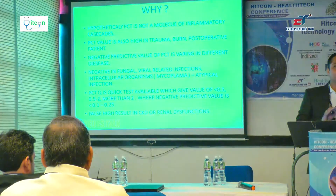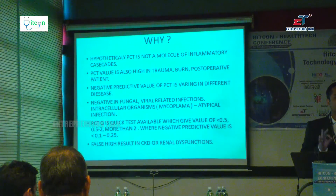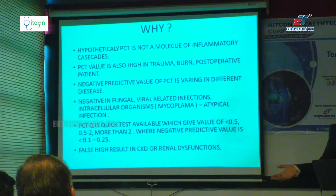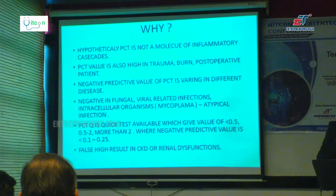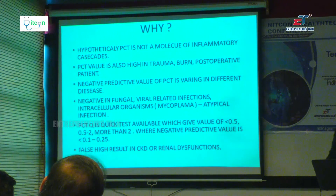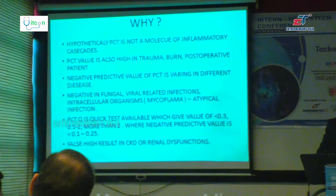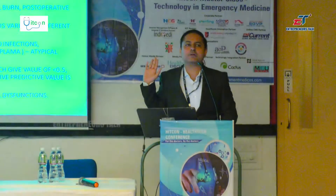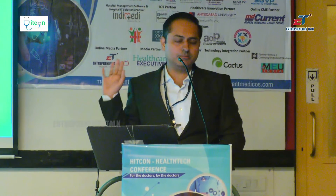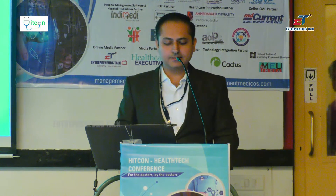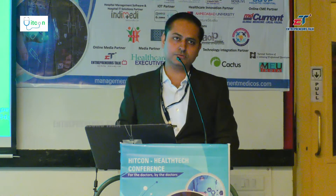There is no universally acceptable negative predictive value for every single disease. Second, PCT can come back negative in fungal, viral, and atypical diseases. Once you ask for PCT, it will be available from a good pathology lab within 6 to 12 hours. So what are you going to do within 6 to 12 hours? A quick test known as PCTQ is available, but the limitation of PCTQ is it gives you only three results: less than 0.5, 0.5 to 2, or more than 2 to 5. But our interest is whether it is less than 0.1 — a good negative predictive value — which is not possible with PCTQ. And there are false high results in CKD patients with renal dysfunction.